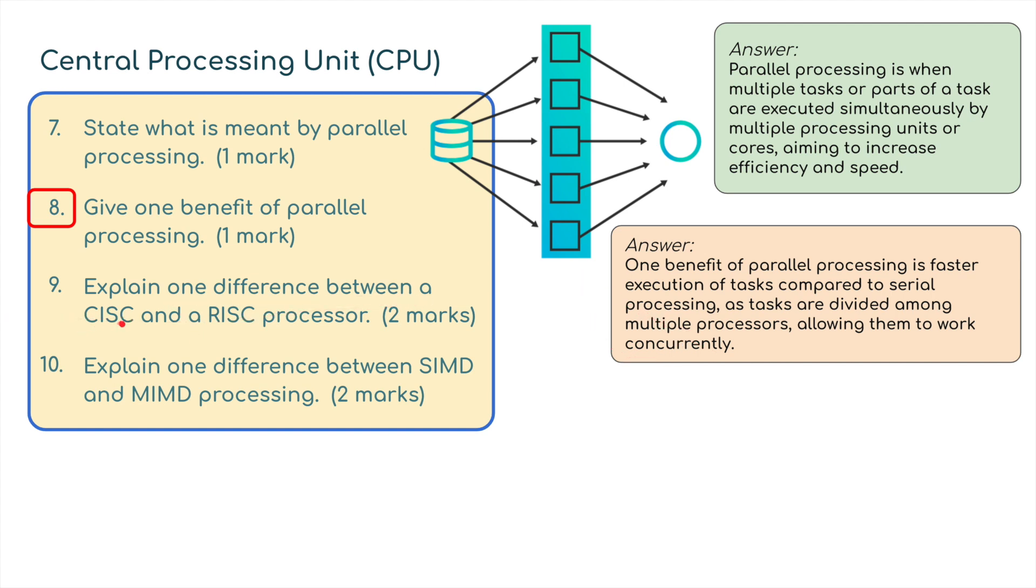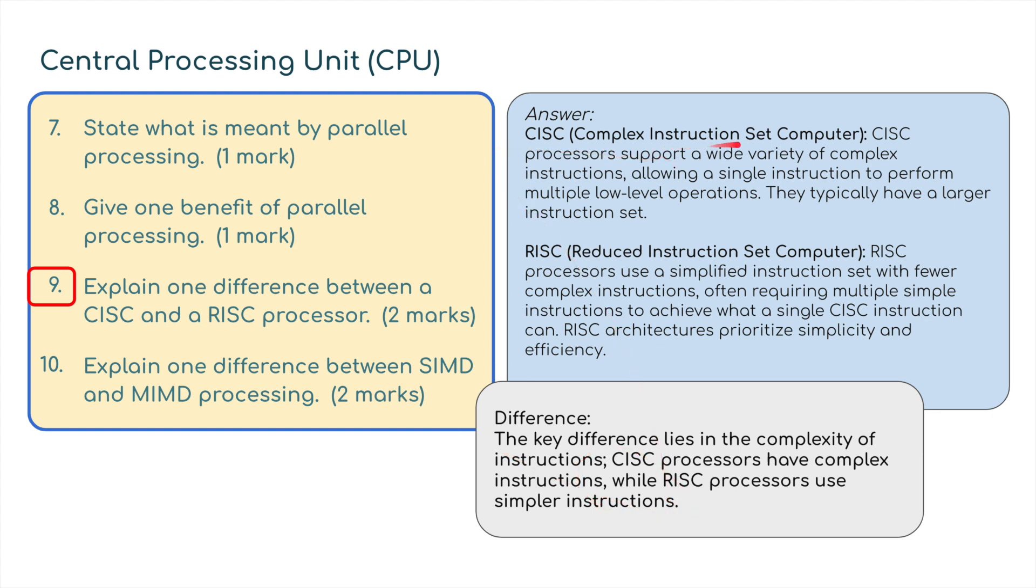Explain one difference between a CISC and a RISC processor. CISC, complex instruction set computer processors, support a wide variety of complex instructions, allowing a single instruction to perform multiple low level operations. They typically have a larger instruction set. Whereas RISC, reduced instruction set computer processors, use a specified instruction set with fewer complex instructions, often requiring multiple simple instructions to achieve what a single CISC instruction can. The key difference lies in the complexity of instructions: CISC processors use complex instructions while RISC processors use simpler instructions.